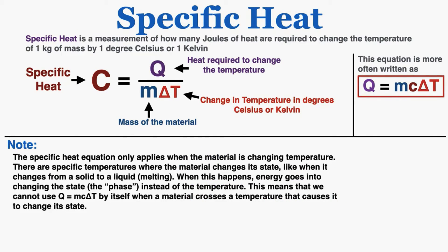Just a quick note: the specific heat equation only applies when the material is changing temperature. There are specific temperatures where the material changes its state, like when it changes from a solid to a liquid when melting, and when this happens, energy goes into changing the state or phase of the material instead of the temperature. This means we cannot use Q equals MC delta T by itself when a material crosses a temperature that causes it to change its state. When it's melting, freezing, evaporating, or condensing, we'll use a different equation covered in the next few videos.